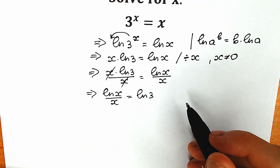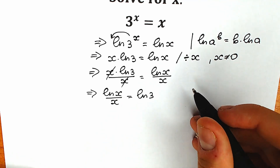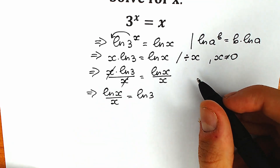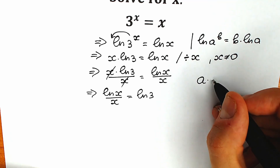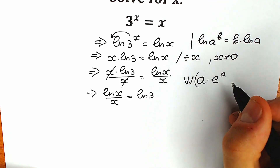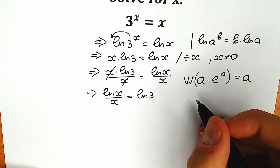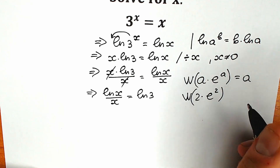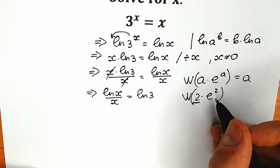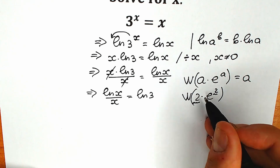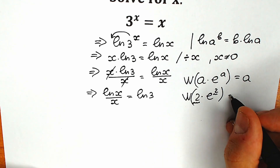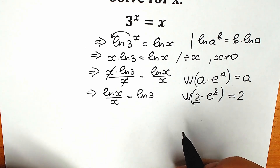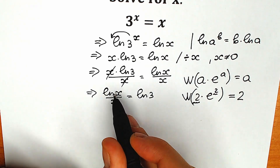Right now we need to know a really interesting thing called the Lambert W function — an extremely important part for us, because this function will help us simplify the expression on the left side. For example, we have an expression a times e to the power a. Whenever we apply the Lambert W function to this expression, we get only our a. So the key requirement is that the same expression appears as the coefficient and as the exponent of e. When we apply the Lambert W function, the result is only our a.